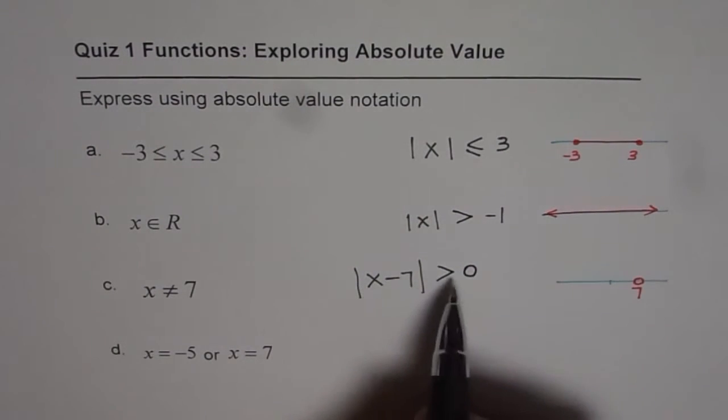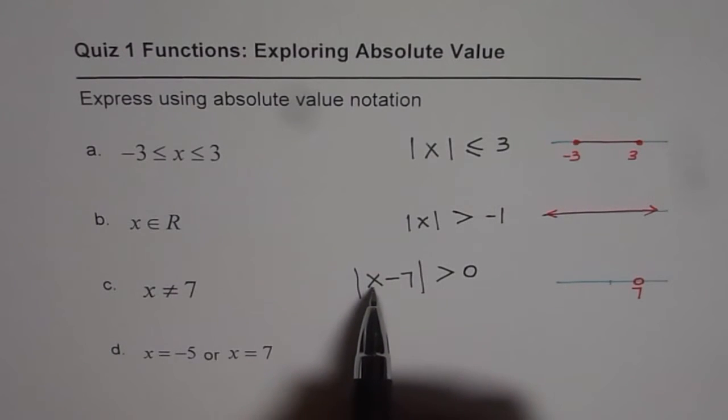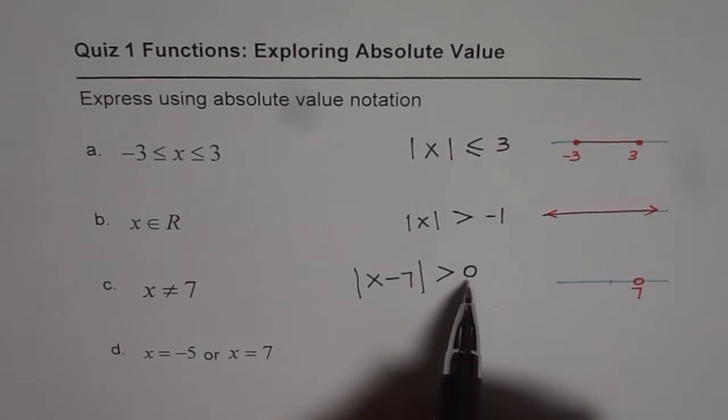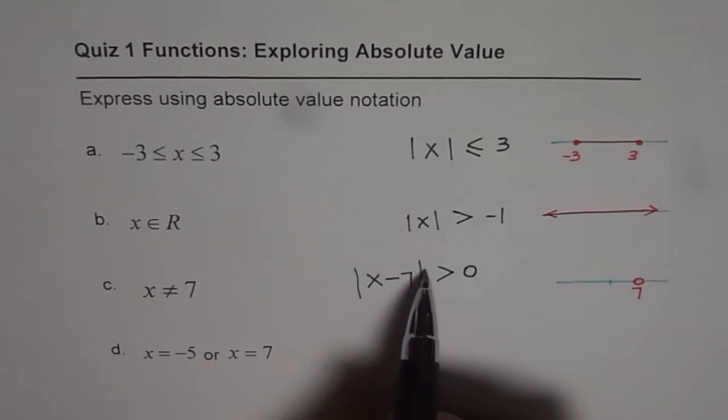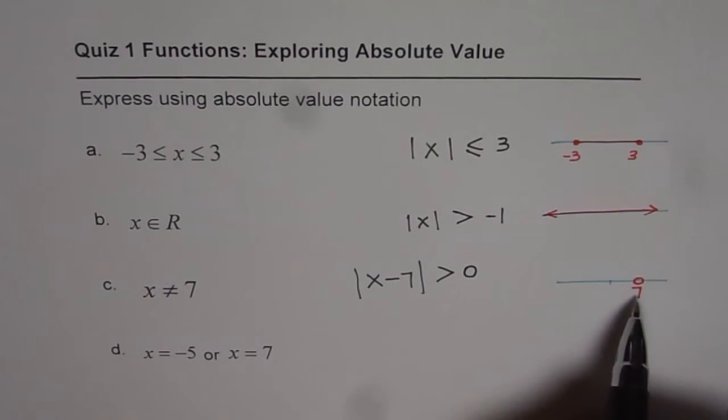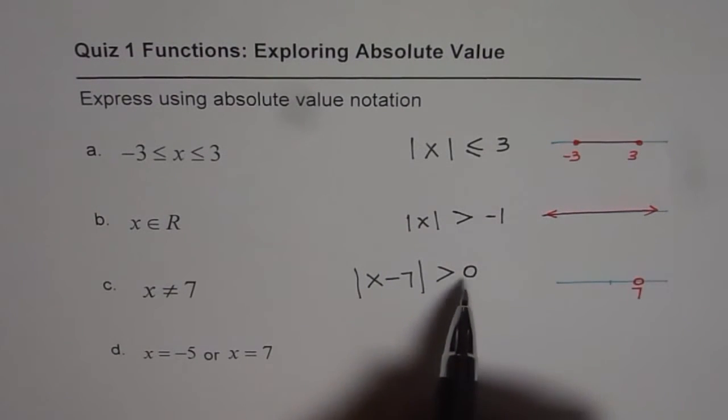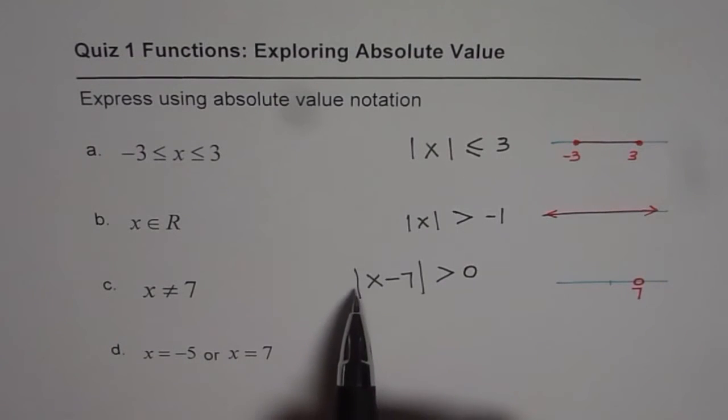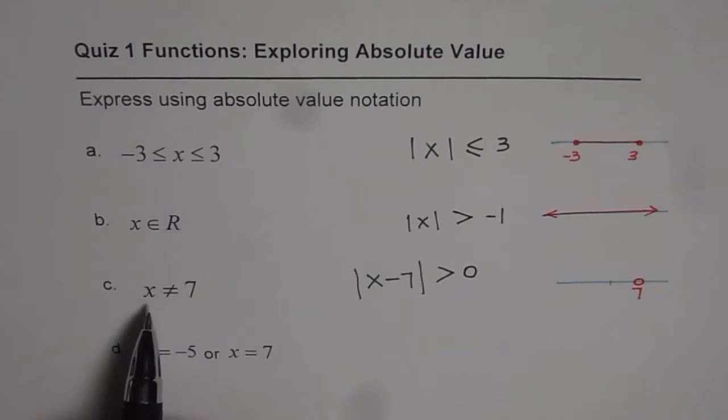If I say greater than 0, then for x equals to 7, this value will be equal to 0. And if I say greater than 0, for any other value except for 7, absolute function will be greater than 0. So, absolute x minus 7, greater than 0, represents a situation that x is not equal to 7.